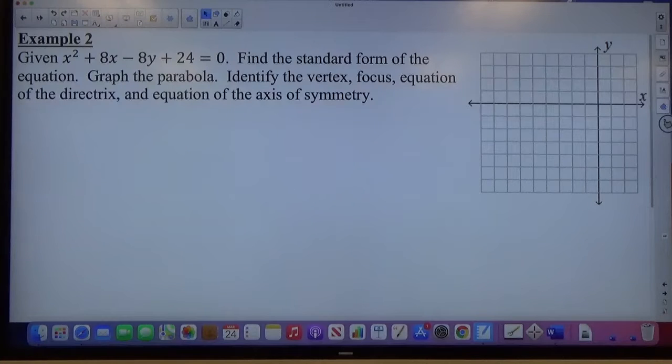Alright, so it says given x squared plus 8x minus 8y plus 24 equals 0, find the standard form of the equation, graph the parabola, identify the vertex, focus, equation of the directrix, and equation of axis of symmetry.